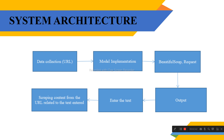The system architecture is shown here. The first step is data collection, which collects large amounts of data from websites using URLs. Then model implementation takes place using Beautiful Soup and requests packages. The requests package is used to access a URL, and then it scrapes content from the URL related to the text entered.